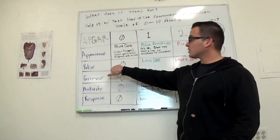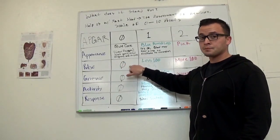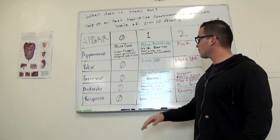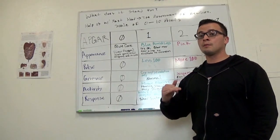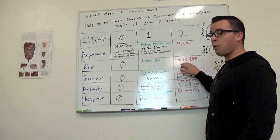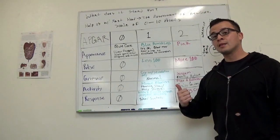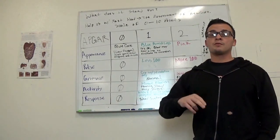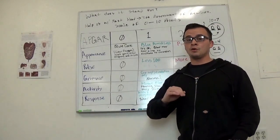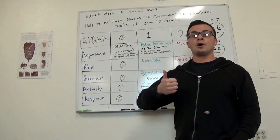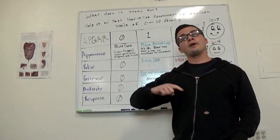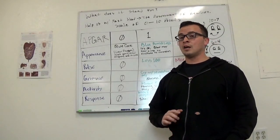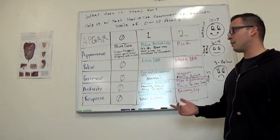On your Pulse, if there's no pulse present, baby gets a 0. If the pulse is below 100, the baby gets a 1. And then if the pulse is above 100, the baby gets a 2. There's no set rate for a baby, a newborn. We just want it above 100. That's all that matters. If it's above 100, awesome. If not, you want to go ahead and recheck in 5 minutes and see how the baby's doing. Keep an eye on that baby.